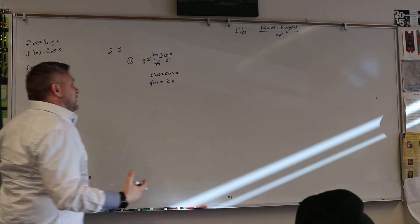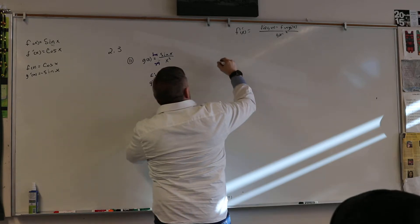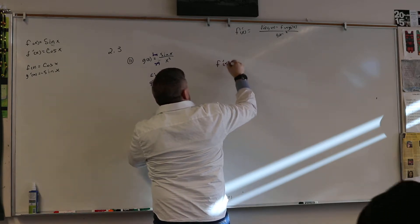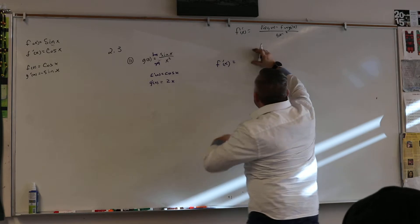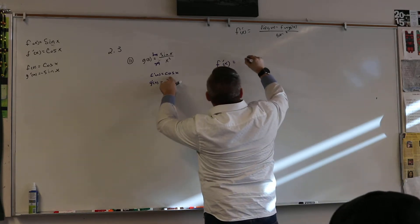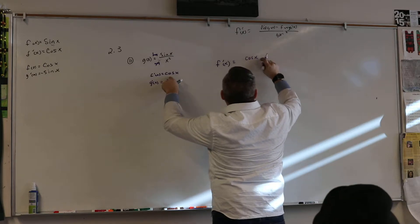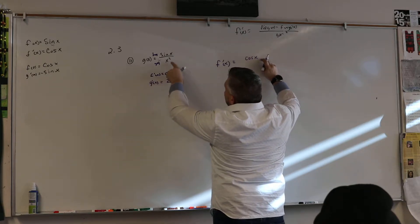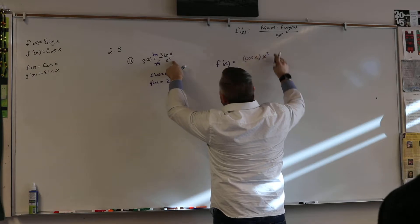So with that, then we can throw in that f prime of the whole function is equal to f prime of x, which is cosine x, times g, so times x squared.